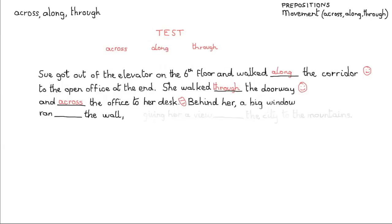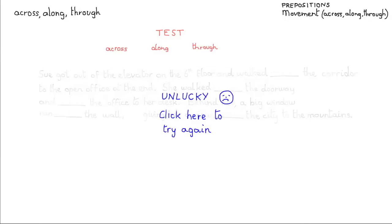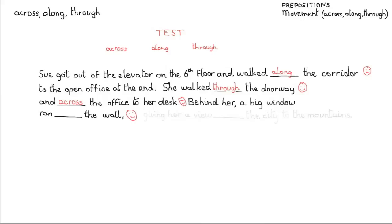And here's the next one: 'Behind her, a big window ran the wall.' Think about that and make your choice. The answer is: along — a big window ran along the wall.